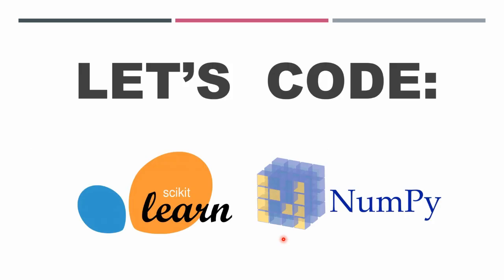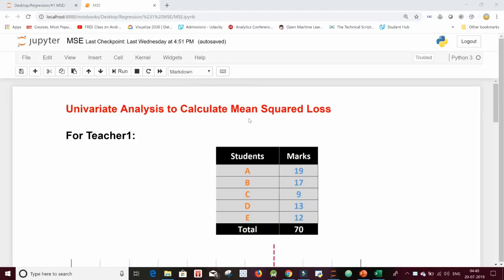So I hope you understood what mean squared error is and how it helps to evaluate a model. So let's code it using scikit-learn and numpy. This is the univariate analysis to calculate mean squared loss.